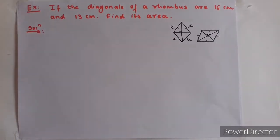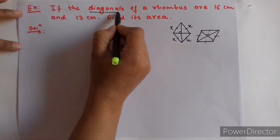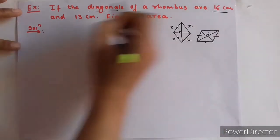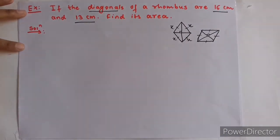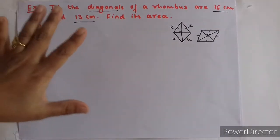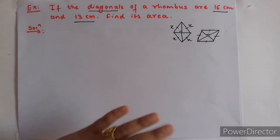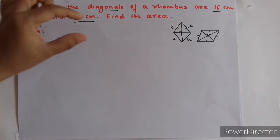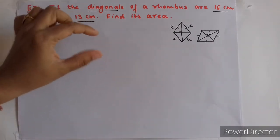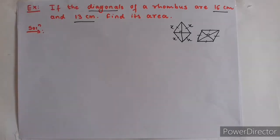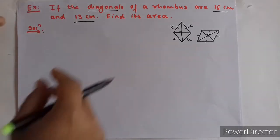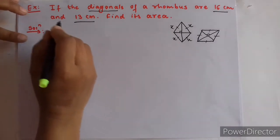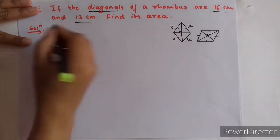The diagonals of the rhombus are given. We have diagonals of 16 cm and 13 cm, so we will use the formula: area of rhombus equals half into D1 into D2, where D1 and D2 denote the diagonals. First, let us write what is given.